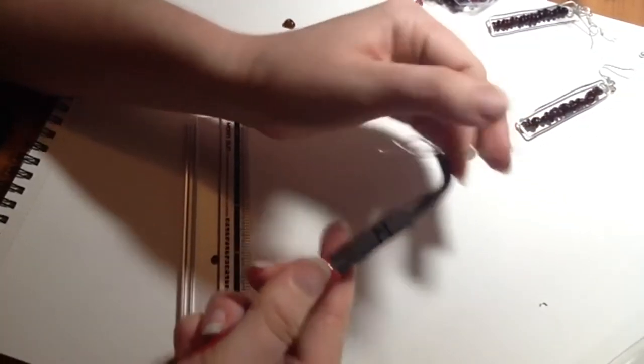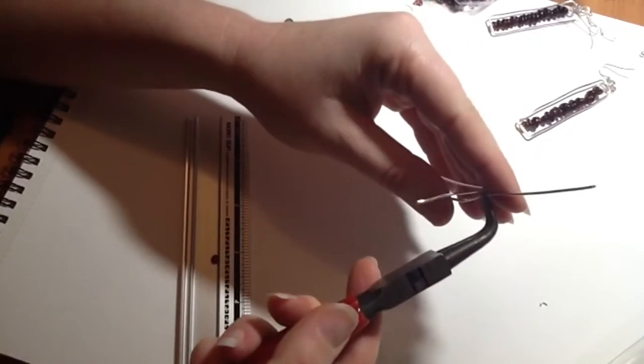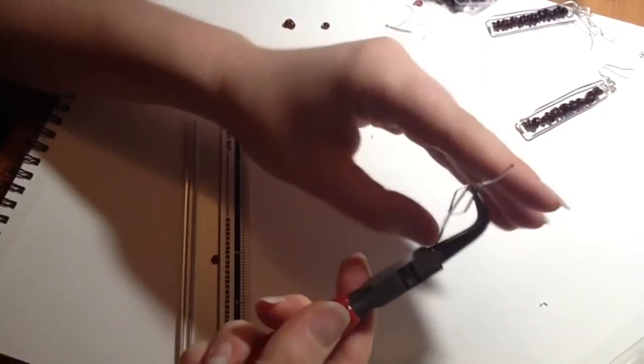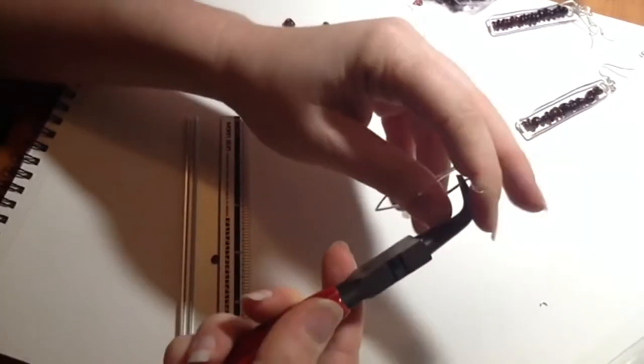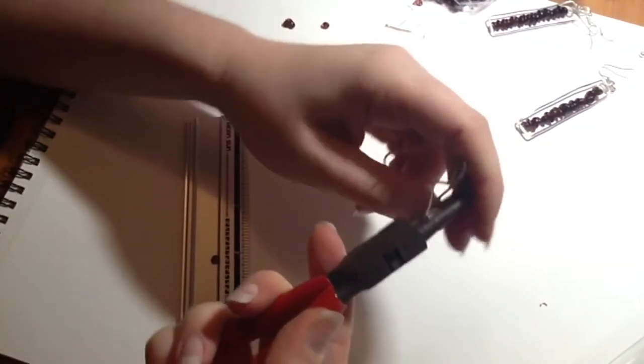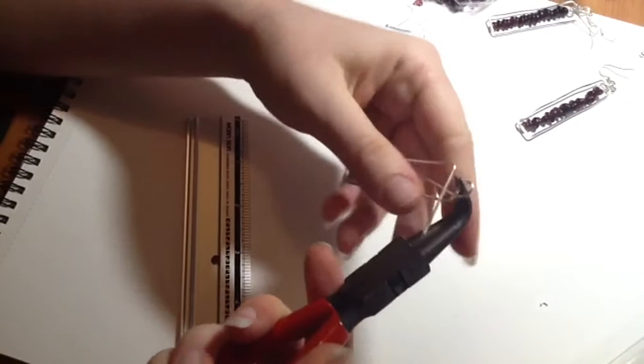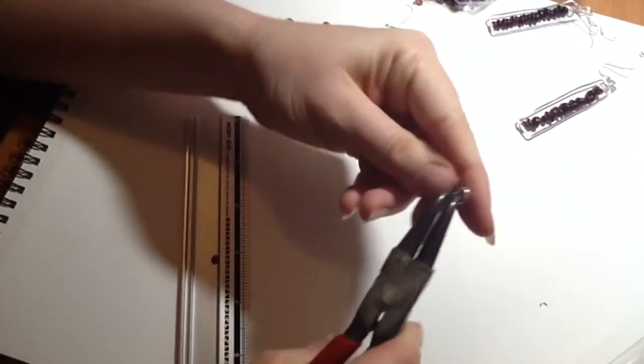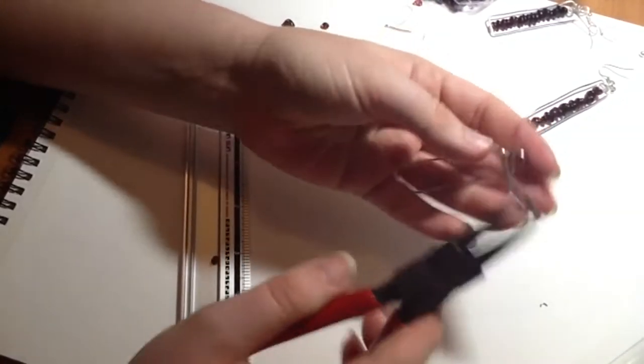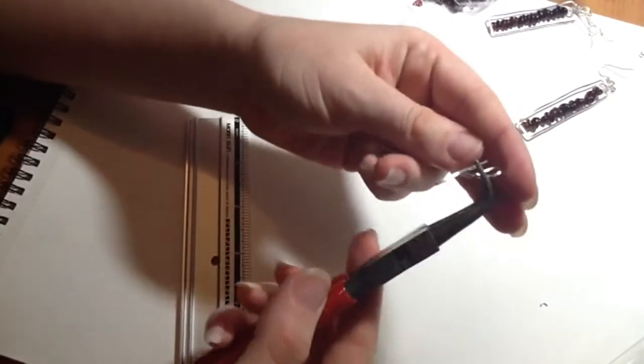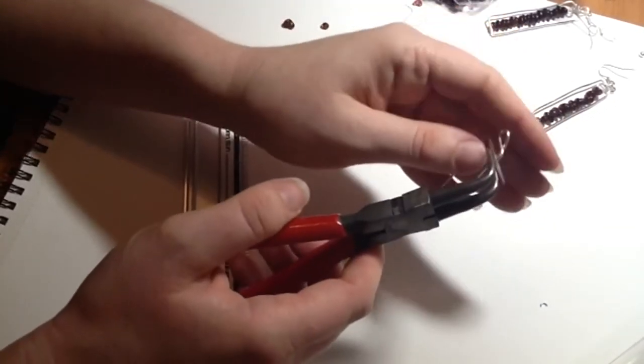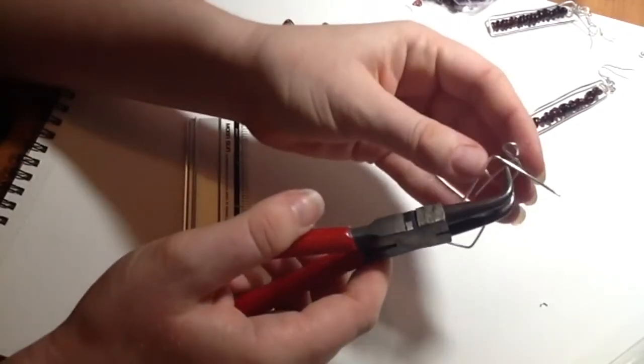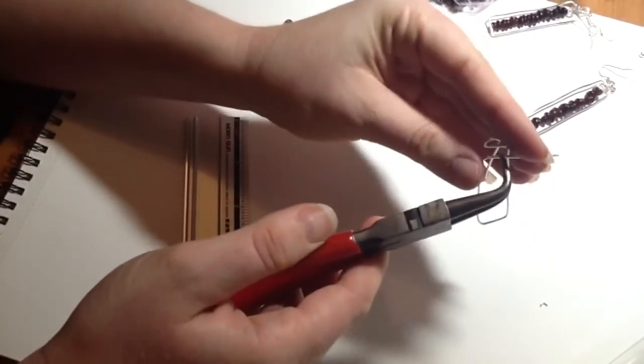And then pull our top wire up over the round section of our pliers to create a loop. Okay, so you can see we've got one loop in the top there now. Now I'm going to do the same with this one.